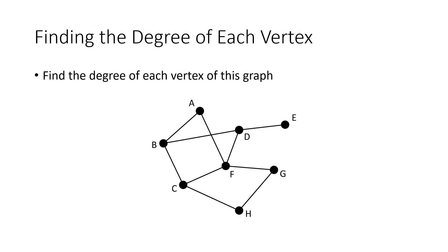Vertex A has two edges coming into it, so A has degree two. B has three edges, so degree three. C also has three edges, degree three. D is over here — that's three again. E just has one. F has four. G is going to be a two. And H is also going to be a two. So there I've counted the degree of each of the vertices of my graph.